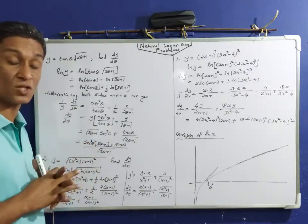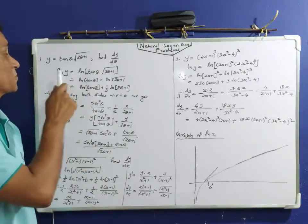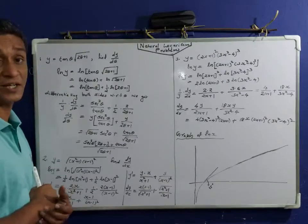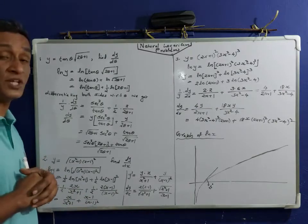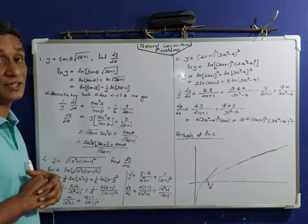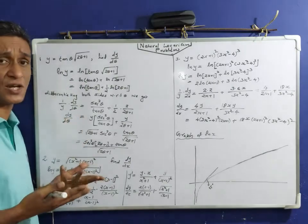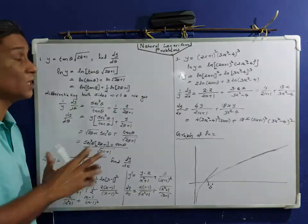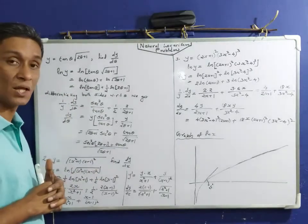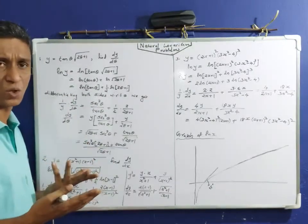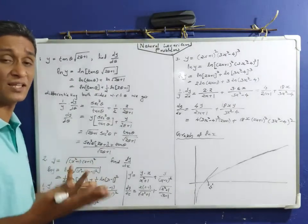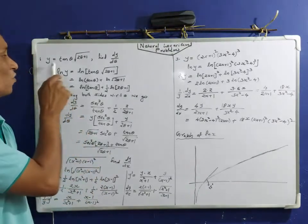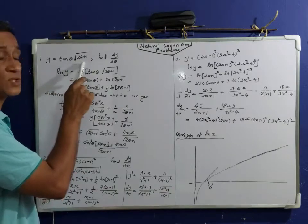We will start our video. The first problem is: y = tan θ · √(2θ + 1), find dy/dθ. That is, y equals tan θ into root of (2θ + 1). We need to find dy/dθ. So we apply logarithmic differentiation.